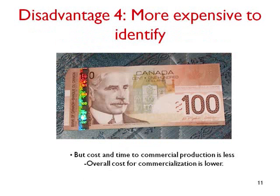Disadvantage 4. Aptamers are generally more expensive to identify than antibodies. Aptamer identification is labor intensive — we cannot get around that. If we automate the aptamer identification process, we reduce our ability to select for optimum specificity. Too much selection pressure too early, and the really good binding sequences are lost. Too little selection pressure, and the desired specificity is not obtained. This is a science that requires considerable expertise and mathematical modeling.